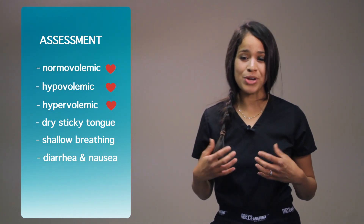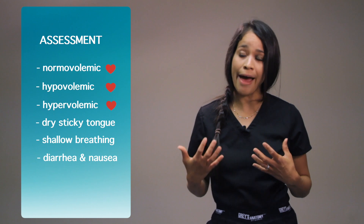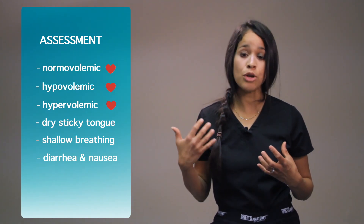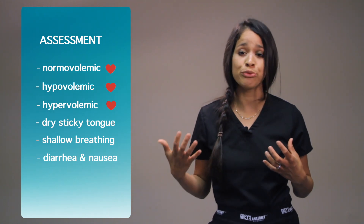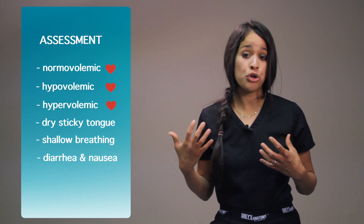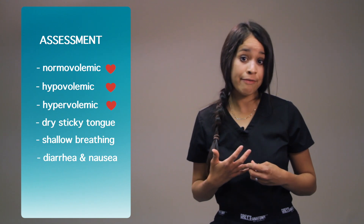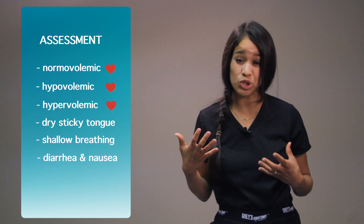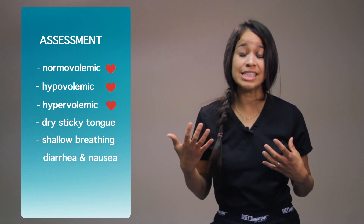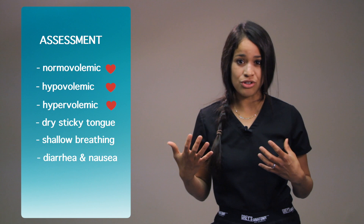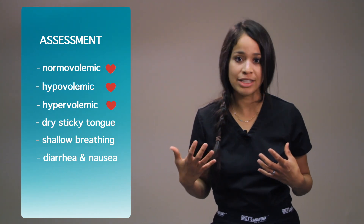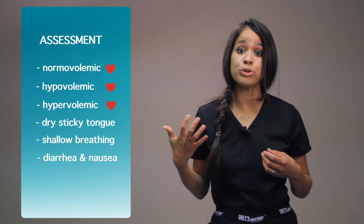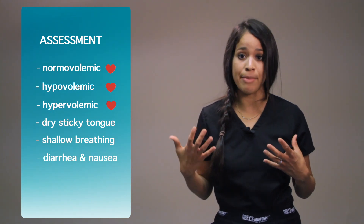Readings with jugular vein distension and a bounding fast pulse. Moving on to integumentary, your patient typically will have a dry mucus membrane. With respiratory, your patient may have shallow breathing. For your neurovascular system, you may find muscle weakness, which is usually a late symptom, along with headaches, confusion, and potentially seizures. For gastrointestinal, you would have increased hyperactive bowel sounds, diarrhea, nausea, and the kidneys will produce an increased amount of urine.